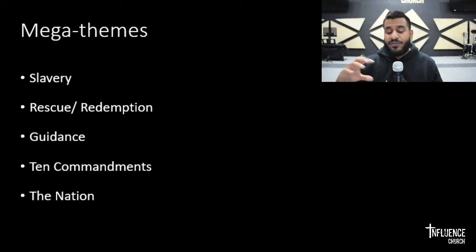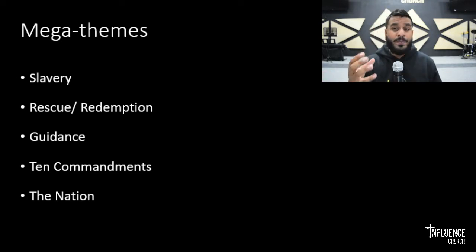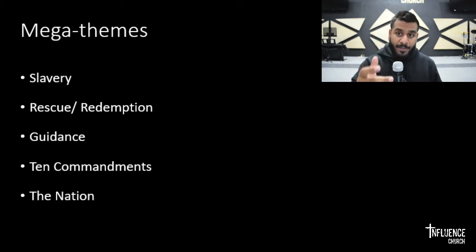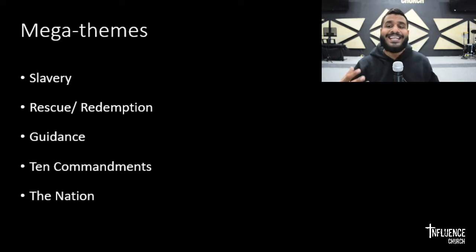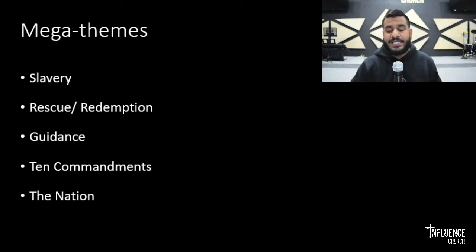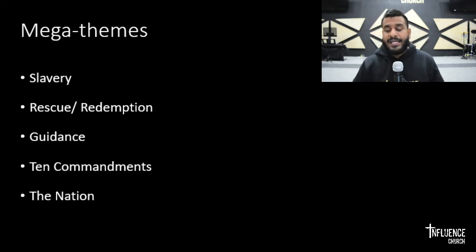Coming out of Egypt, the next theme is guidance, where God actually leads Moses and the children of Israel — almost two million in number — through the wilderness into the promised land that he had promised to bless the nation of Israel with. Then we see the theme of the Ten Commandments, which is given in the book of Exodus. Moving out of that theme, we see the nation of Israel really becoming a nation for the very first time — evolving from a family and community into an actual nation with its own leadership, led by God, mighty and powerful, a reckoning force in history.